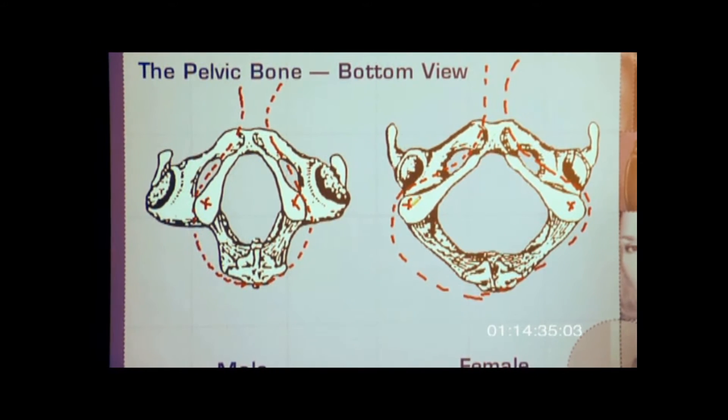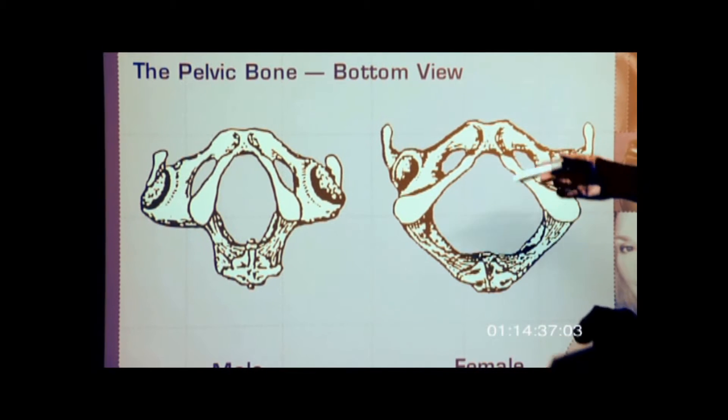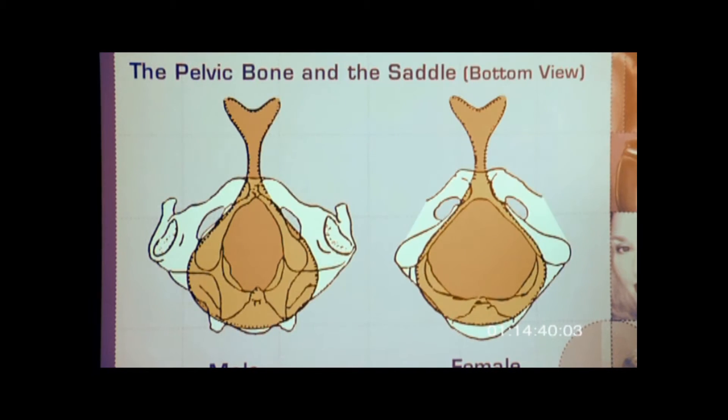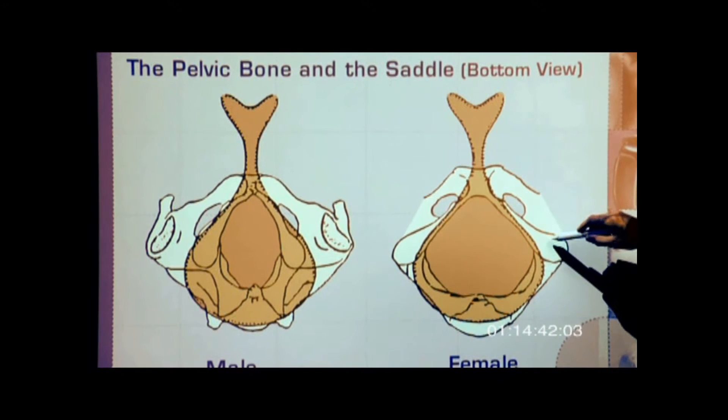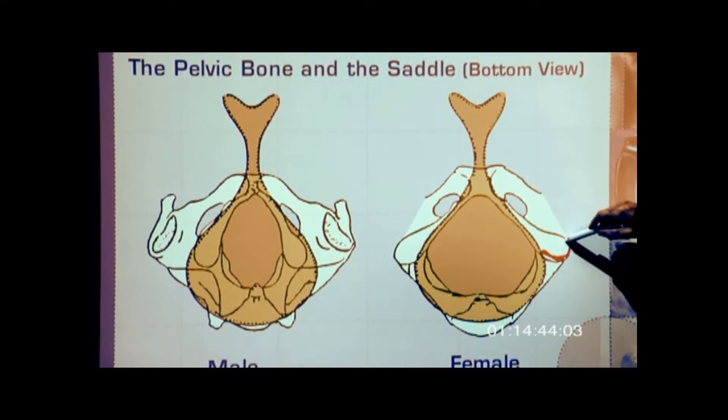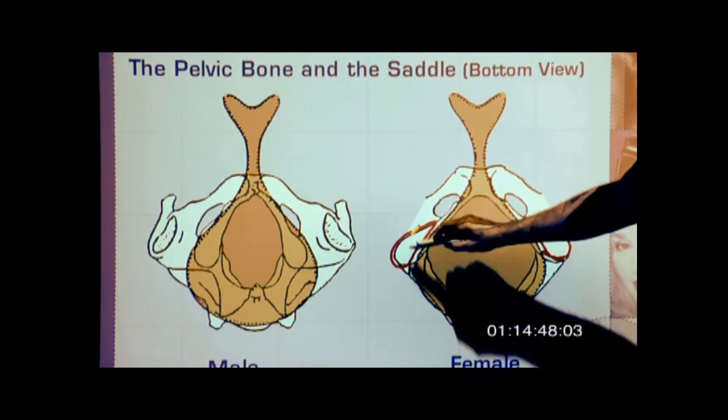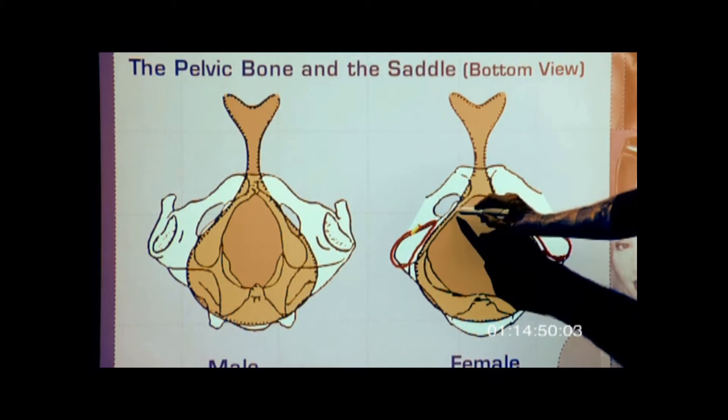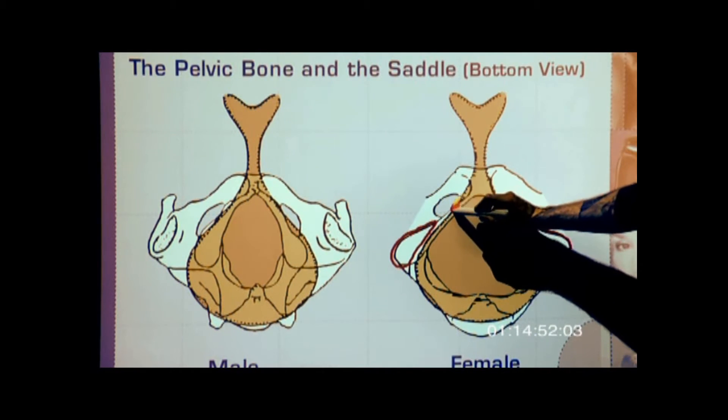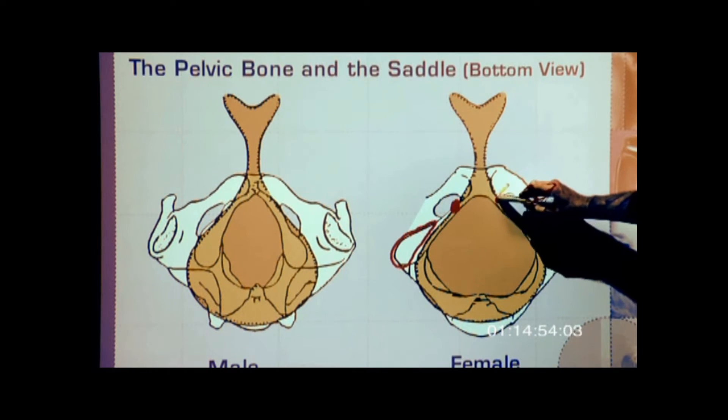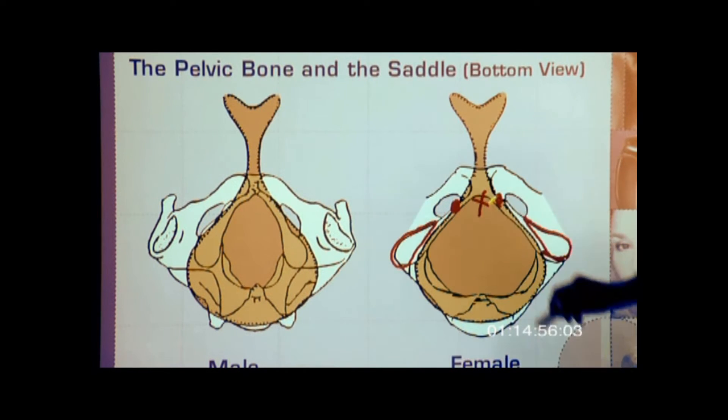Now if I put a female in the male saddle, I would see clearly how the seat bones are over the actual seat foam and the only contact point is right there where the underwear line is and right here on the soft tissue.